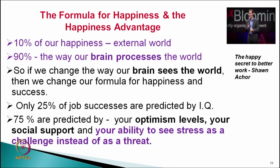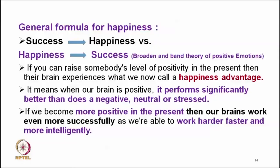Sean Anker said 10% of our happiness is due to the external world, while 90% is determined by the way our brain processes the world. If we change the way our brain sees the world, we change our formula for happiness and success. He also observed that 25% of job successes are predicted by IQ, while 75% are predicted by various other factors such as optimism level, social support, your ability to see stress as a challenge instead of a threat, and other factors like emotional intelligence.